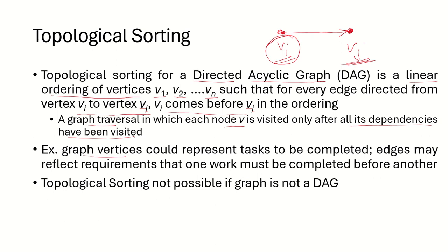These graph vertices could represent the tasks to be completed, and the edges reflect the requirements that one task must be completed before another. So if there is an edge from v1 to vj, v1 must be completed first before we go to vj.